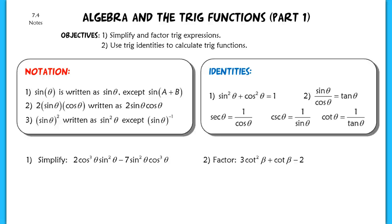This lesson is for section 7.4, and we're going to split it into two different parts. In this first part, we'll focus on some very basic Algebra 1 and Algebra 2 skills in relation to trig expressions. Our goal is to simplify and factor trig expressions and use basic trig identities to calculate trig functions. Then in part two, we'll use today's skills to prove different trig identities — a foundation for more difficult problems in this section.